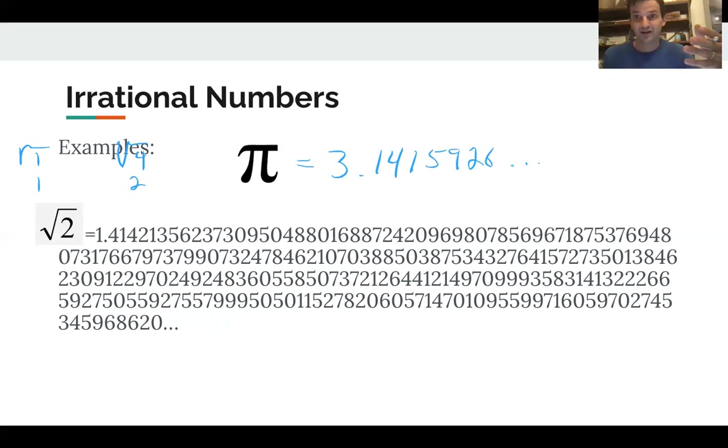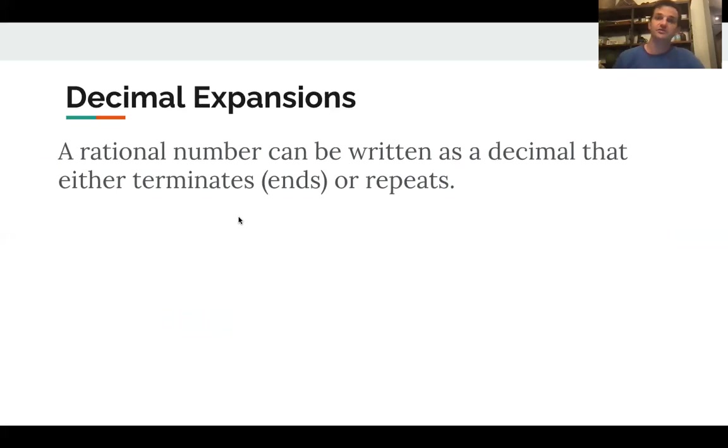So let's get those notes. A rational number can be written as a decimal that either terminates, meaning it ends, or it repeats. So some rational numbers like this, when you write the decimal, they terminate, right? 1/4 equals 0.25. And sometimes, like with 1/3, they repeat, 0.33 repeating forever.